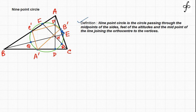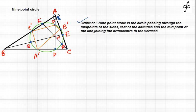So the nine-point circle is the circle passing through these nine points: A dash, B dash, C dash — the midpoints of the sides; D, E, F — the feet of the altitudes; and P, Q, R — the midpoints of the lines joining the ortho center to the vertices.